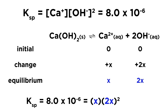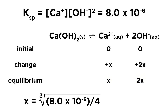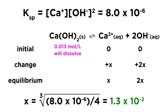Putting these into the Ksp expression, we get that the Ksp will be equal to 4x cubed. Now solving for x, we divide by 4 and then take the cube root, leaving us with 1.3 times 10 to the negative 2 for x, which will therefore be the molar solubility, which we can interpret as the solubility of the solid expressed in moles per liter, or the moles of the solid that will dissolve per liter of water.